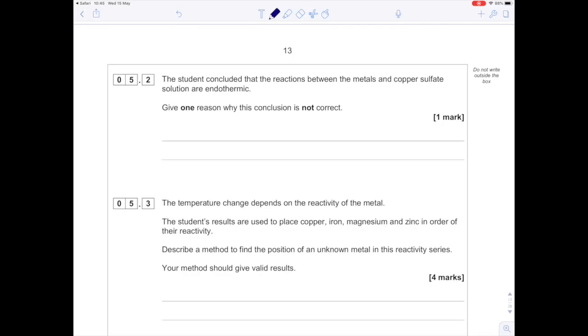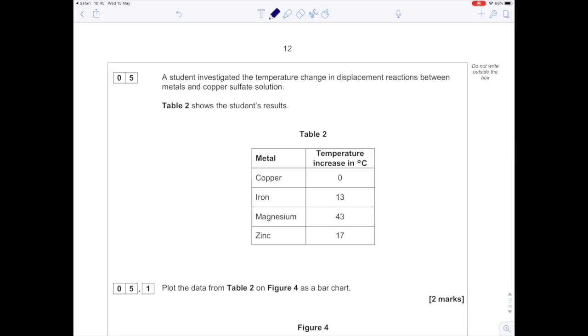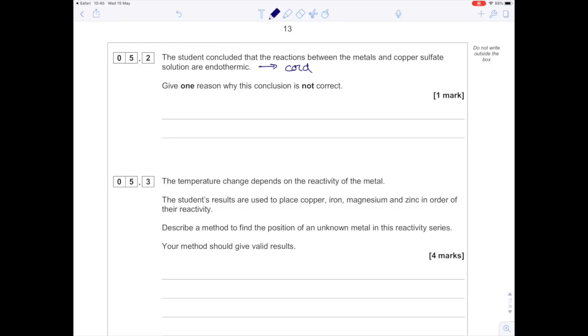The student concluded that the reactions are endothermic. Give one reason why this is not correct. Remember that endothermic reactions get cold, whereas we've been told that the temperature increases, which means this reaction is exothermic. So just write: the temperature increased, so the reaction must be exothermic.